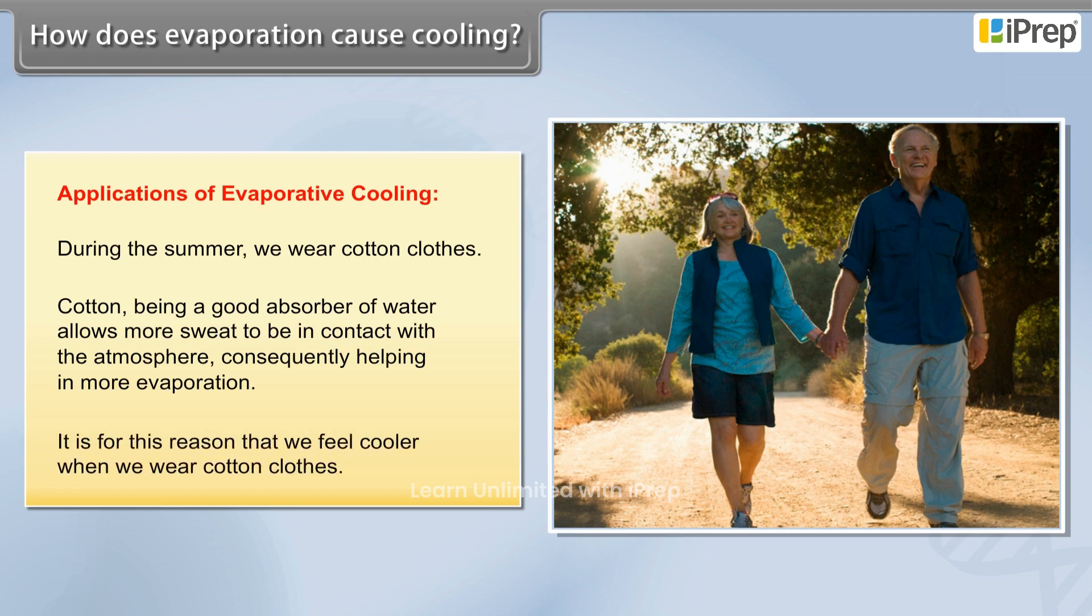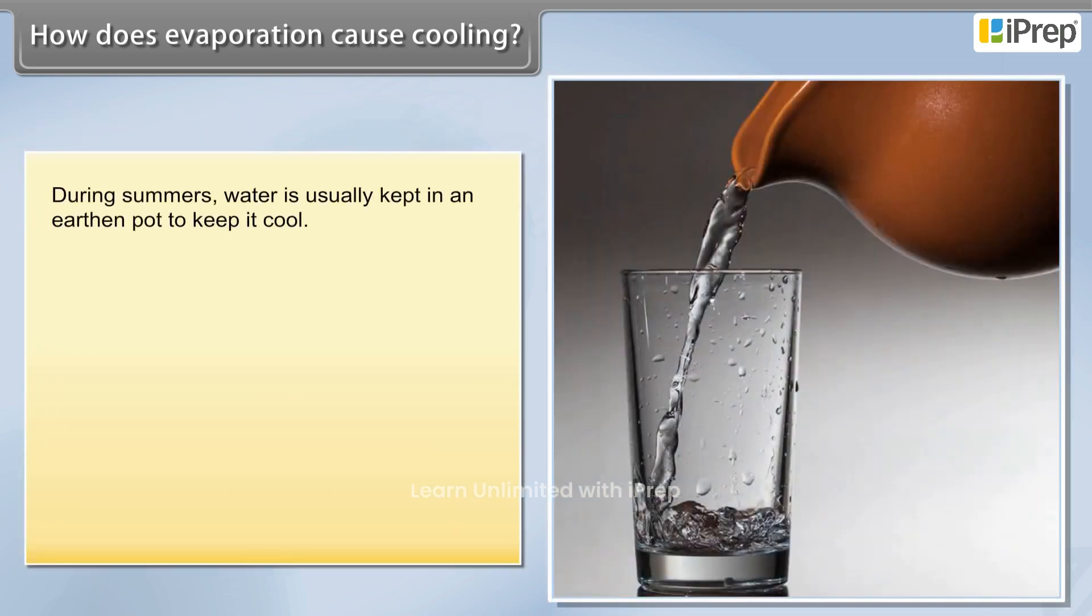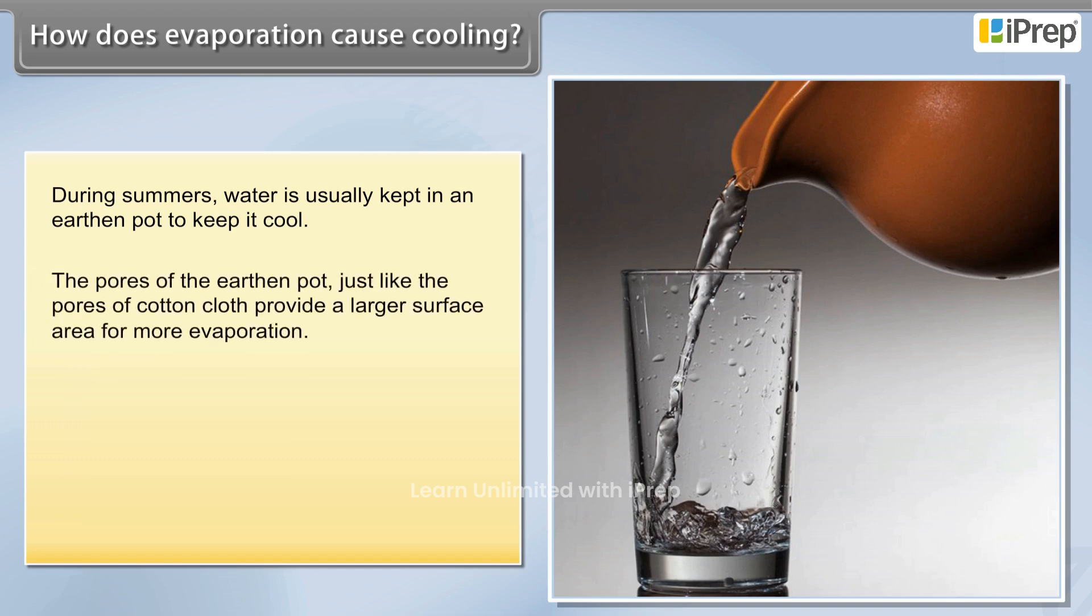It is for this reason that we feel cooler when we wear cotton clothes during summers. Water is usually kept in an earthen pot to keep it cool. The pores of the earthen pot, just like the pores of cotton cloth, provide a larger surface area for more evaporation.